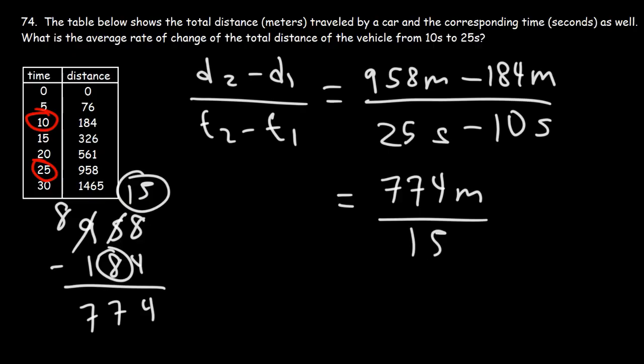25 minus 10 is 15. Now I'm going to use the calculator for this part. You could use long division if you want to. 774 divided by 15 is 51.6. Now the units, what do you think the units is going to be? So notice that we're dividing meters by seconds. So this is going to be meters per second. The average rate of change of distance with respect to time is speed.